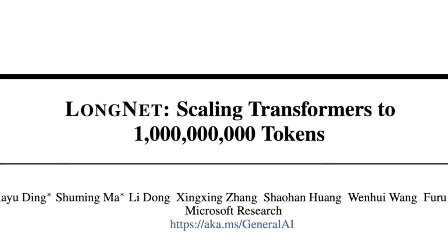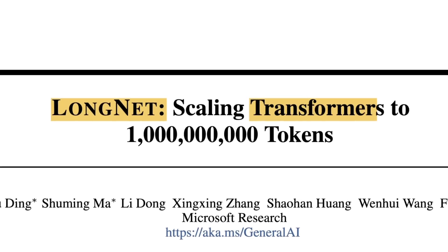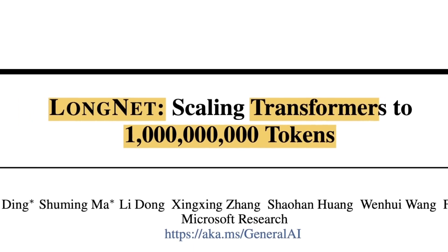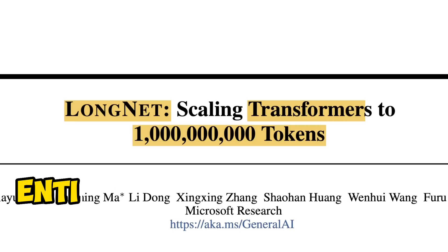These context window lengths are nothing compared to what I'm about to show you. Today, we're going to be looking at LongNet, which is a transformer variant that can scale up to a billion tokens. If this holds true, you can potentially feed in the entire internet in a single context window. It's simply crazy to even imagine something like this.